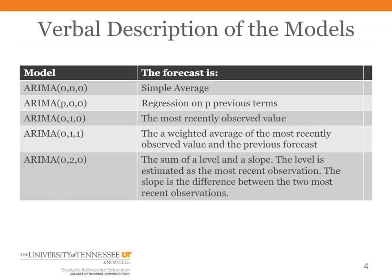And then most recently we looked at the ARIMA(0,2,0), and that model has a slope built into it. So the forecast is the sum of the level and the slope. And the level you estimate is the most recent observation. And the slope is estimated as the difference between the most recent observation and the one just prior to that.